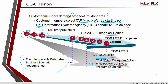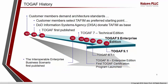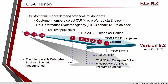Around 2009, the TOGAF 9 version was implemented. During 2011, TOGAF 9.1 was released, and very recently on April 16th, version 9.2 was released as part of an Open Group event held in London by Steve, who is the CEO of the Open Group. This is a quick overview of TOGAF history.